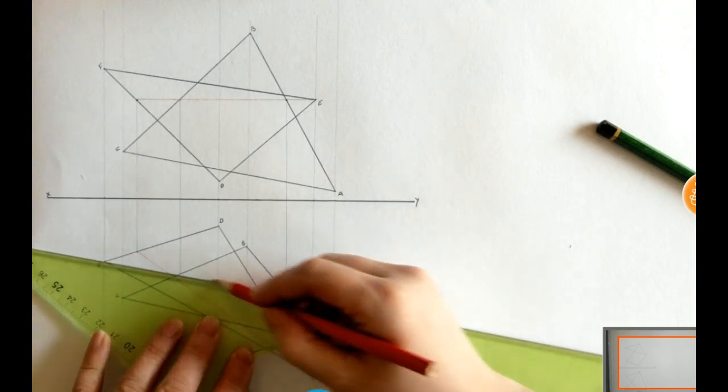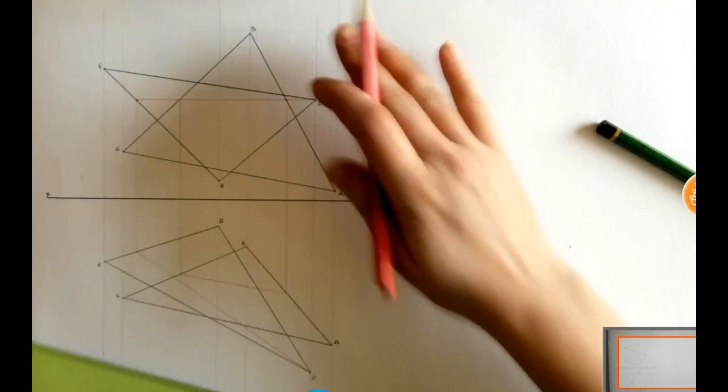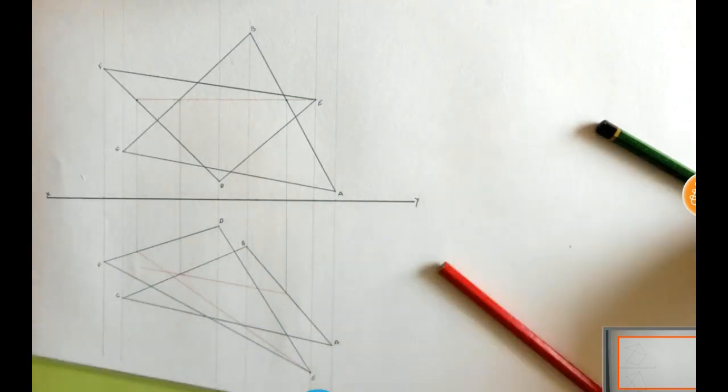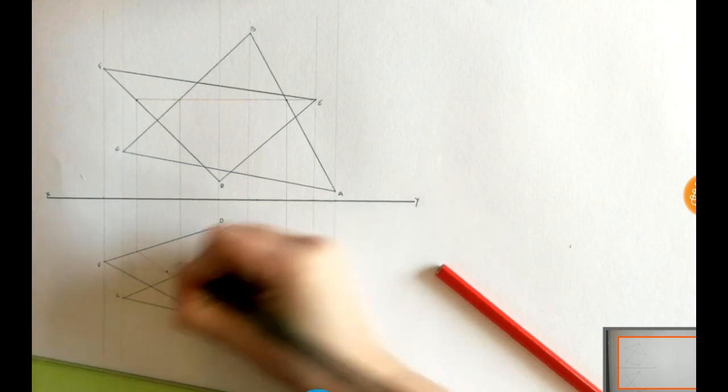When I join them together, it's very obvious to see they're not crossing. So, what I'm going to do is I'm going to extend it so they do cross. And they meet at this point here.